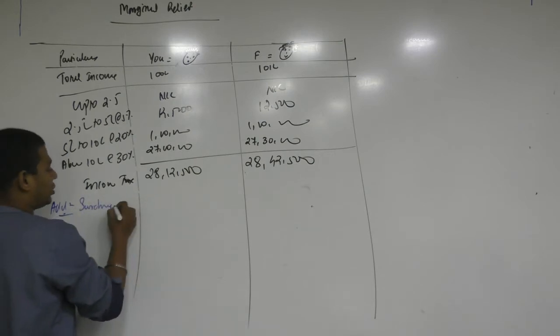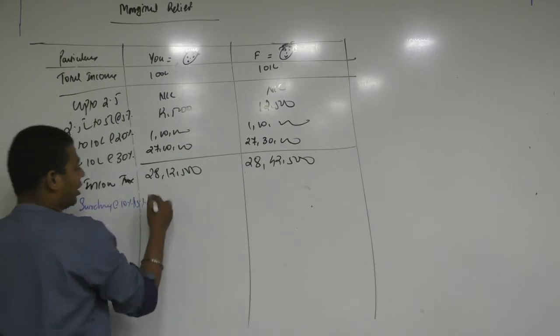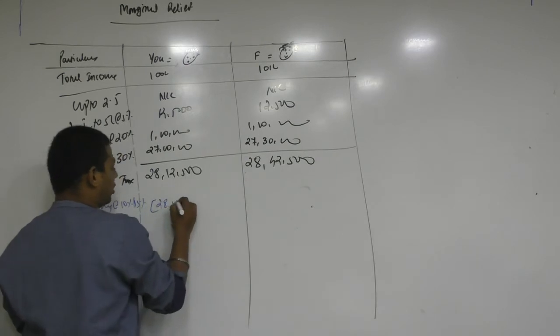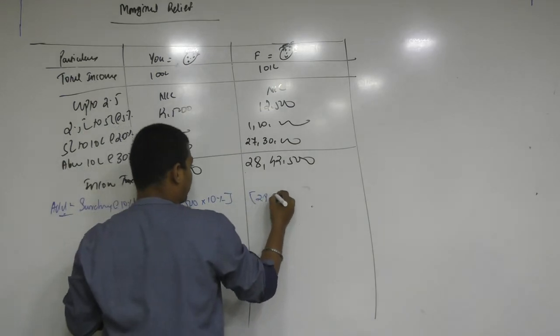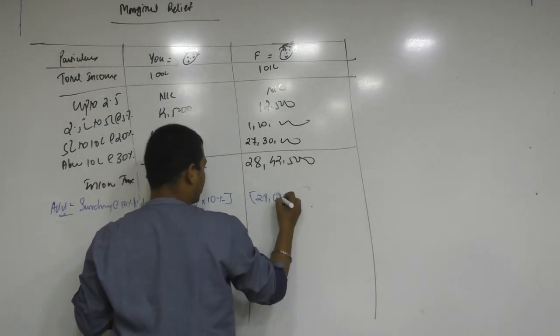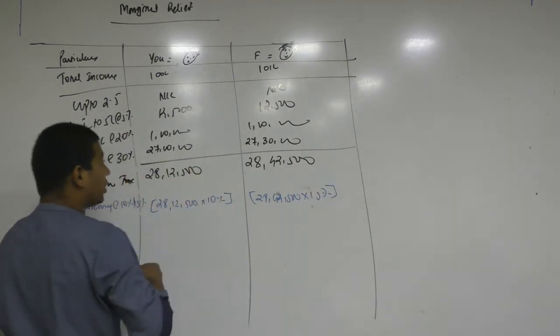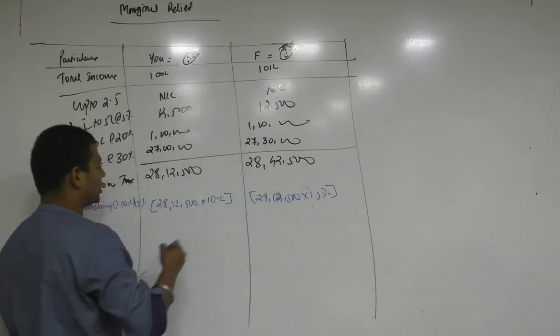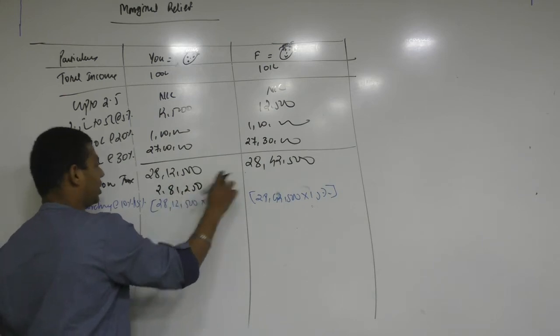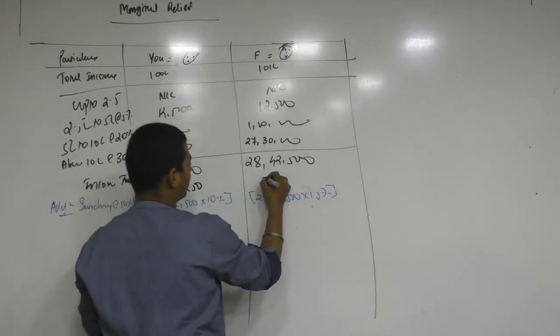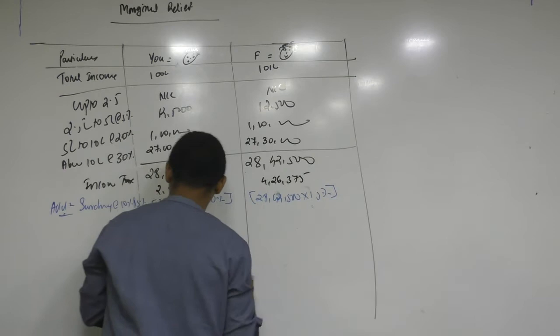Okay. Surcharge. Now surcharge can be at the rate of 10% as well as 15%. Here we have to add 10%. Come on tell me. 28 lakh 12,500 multiplied by 10%. Whereas here 28 lakh 42,500 multiplied by 15%. Okay. Because his income is exceeding 100 lakh. So tell me amounts. 2 lakh 81,250 and here 4 lakh 26,375. 375.